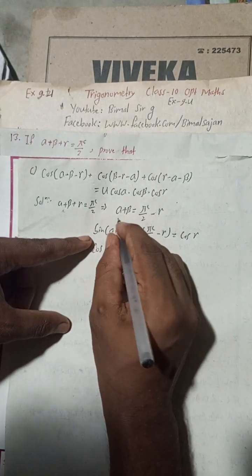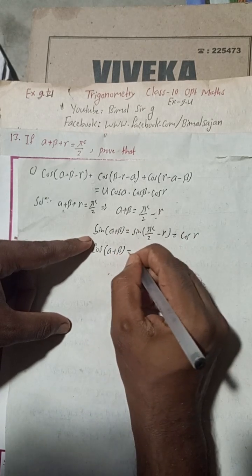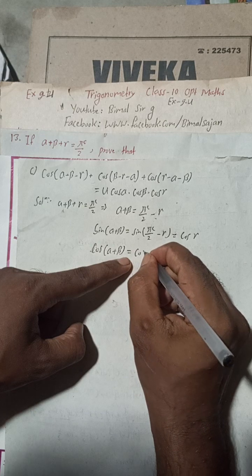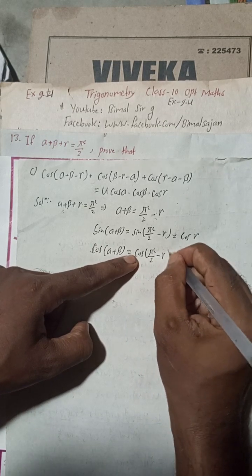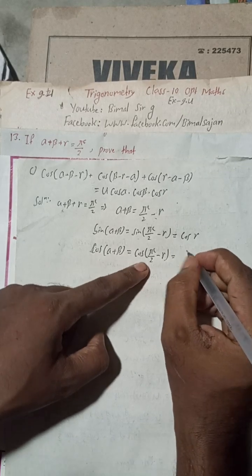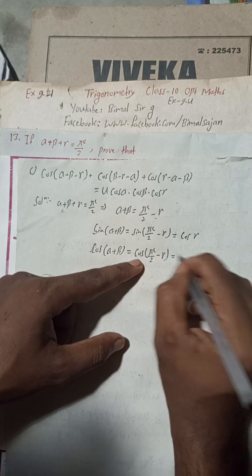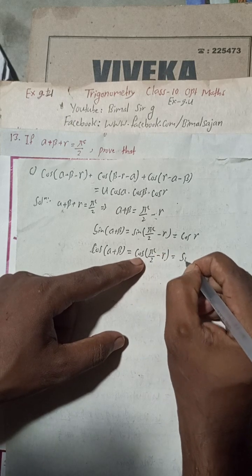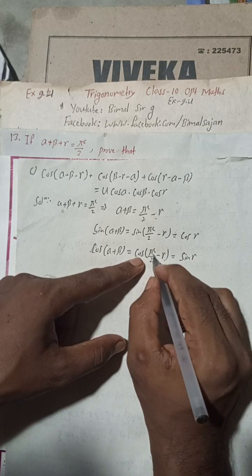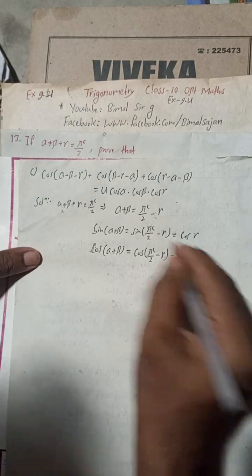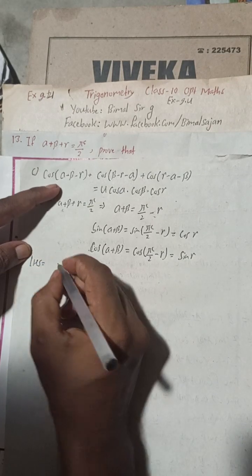Now taking cosine on both sides: cos(alpha + beta) equals cos(pi/2 minus gamma). Since cos(90 minus theta) equals sine theta, this gives sine gamma, and it is also positive as 90 minus gamma is in the first quadrant.